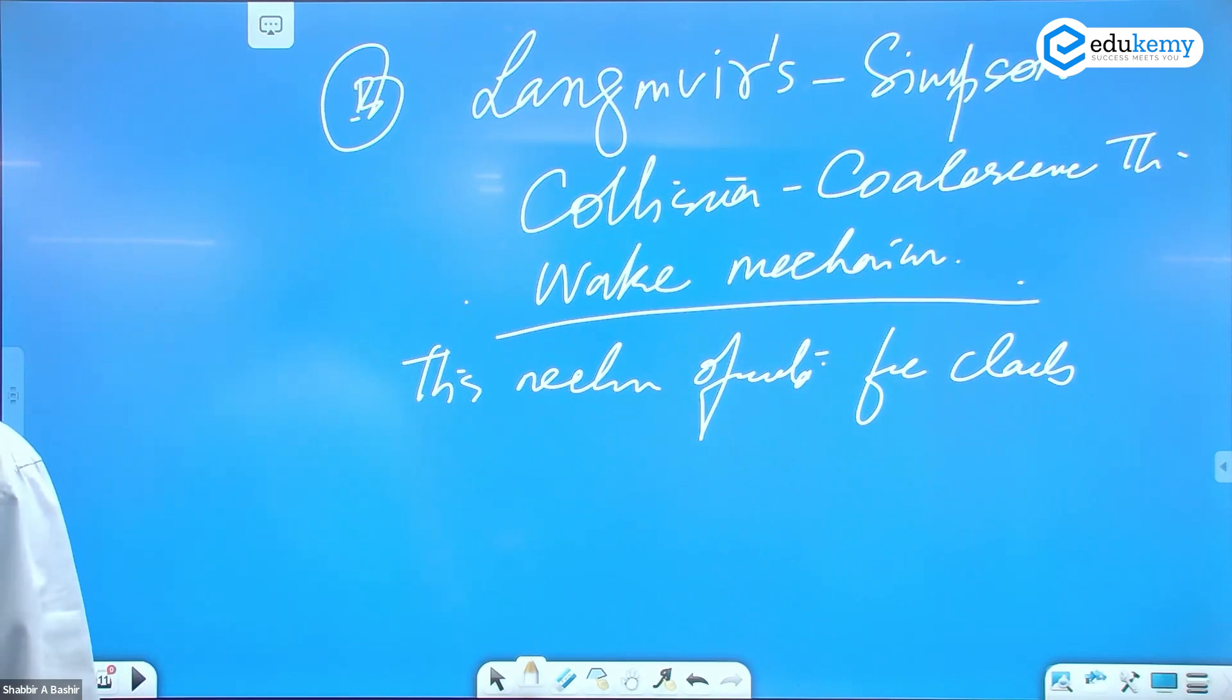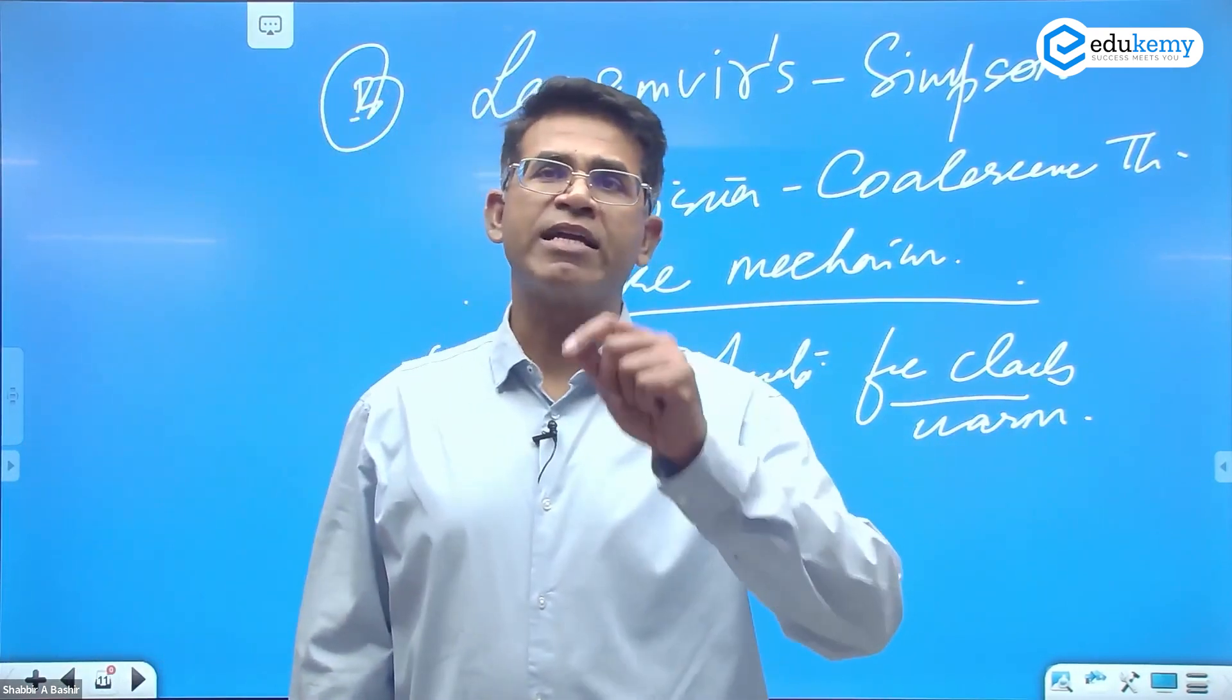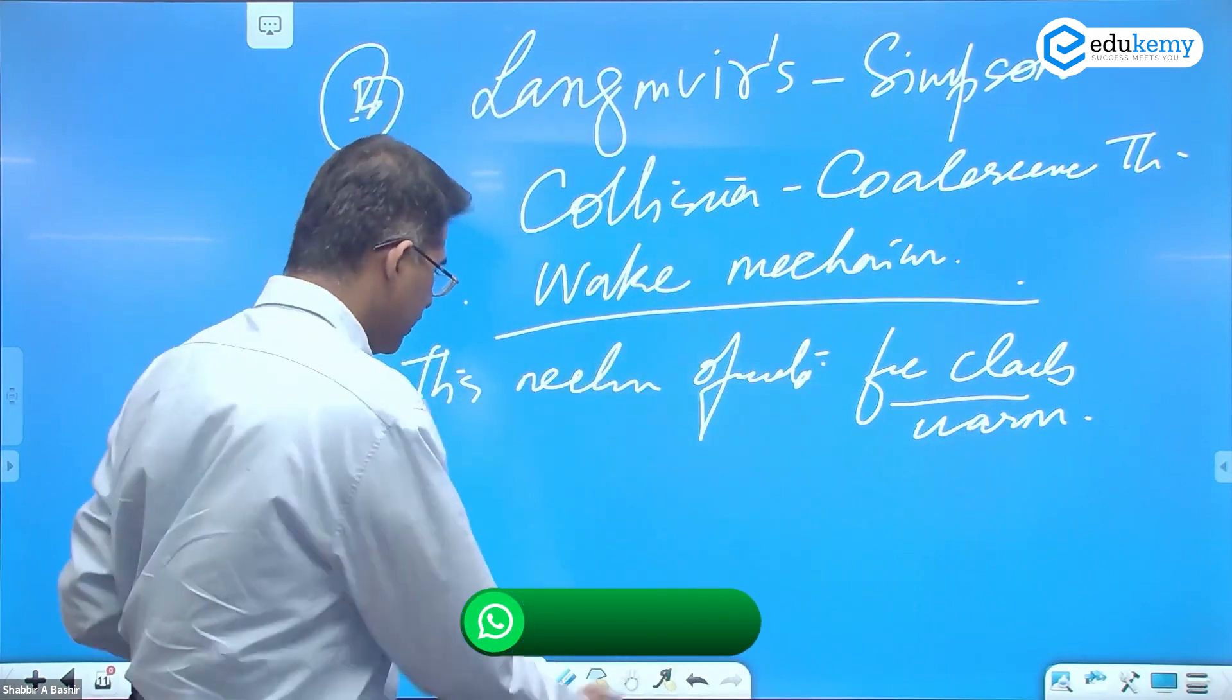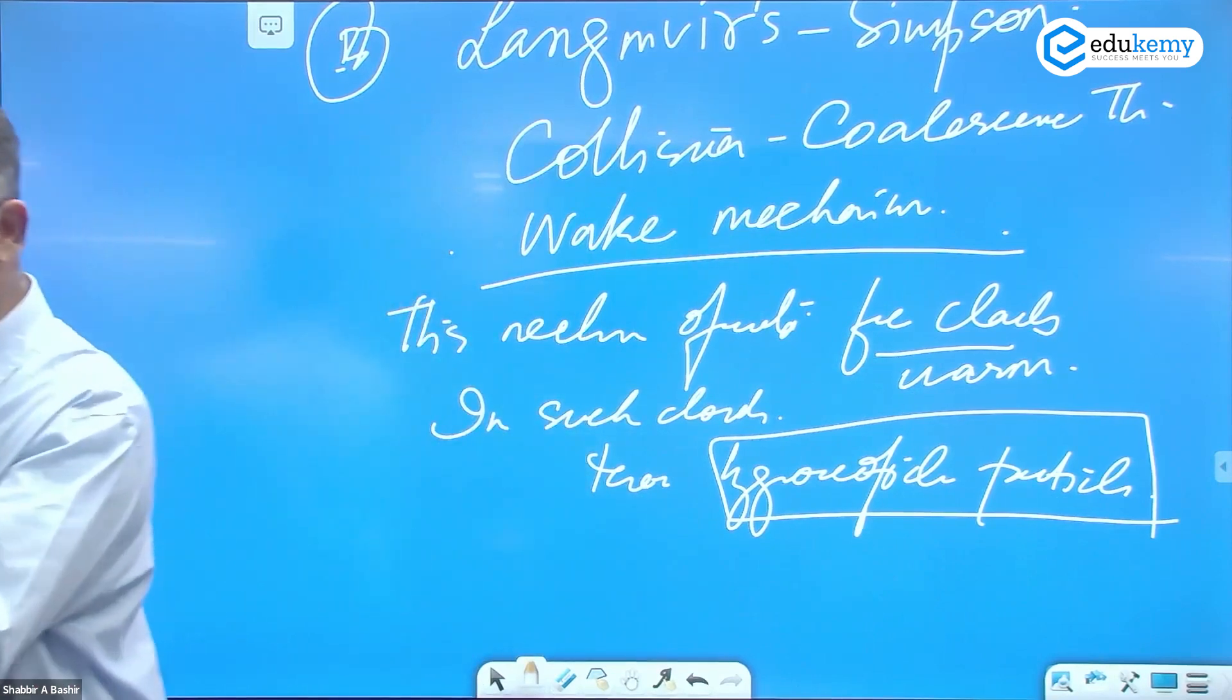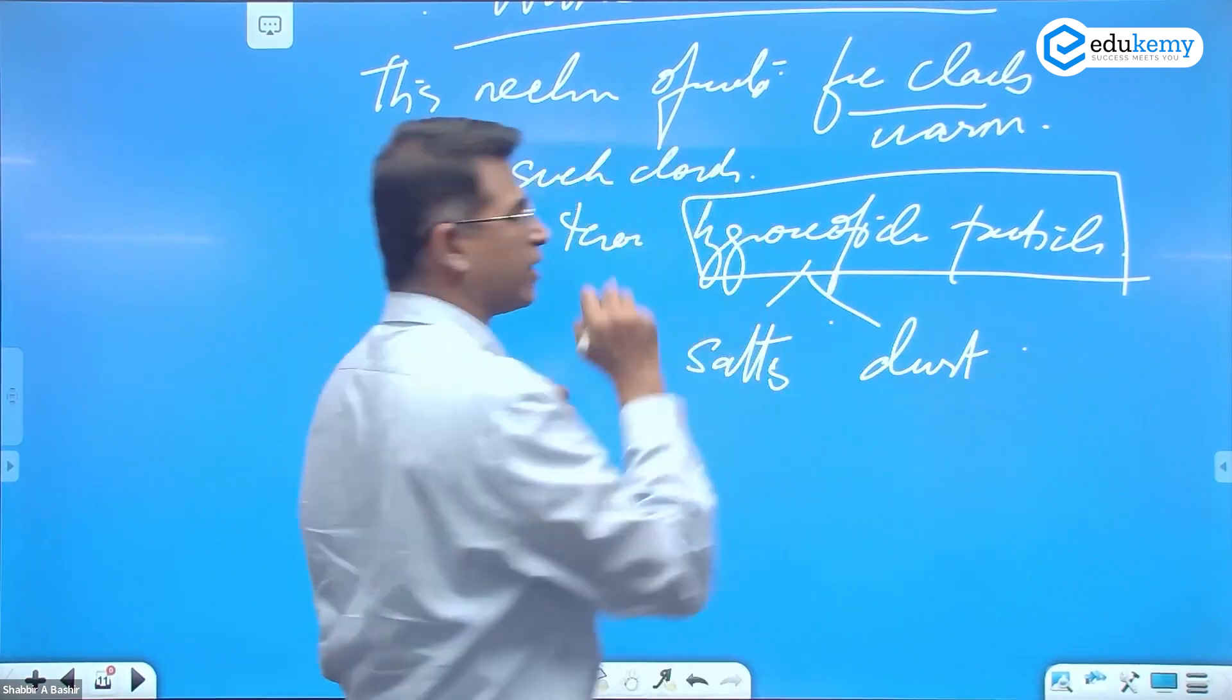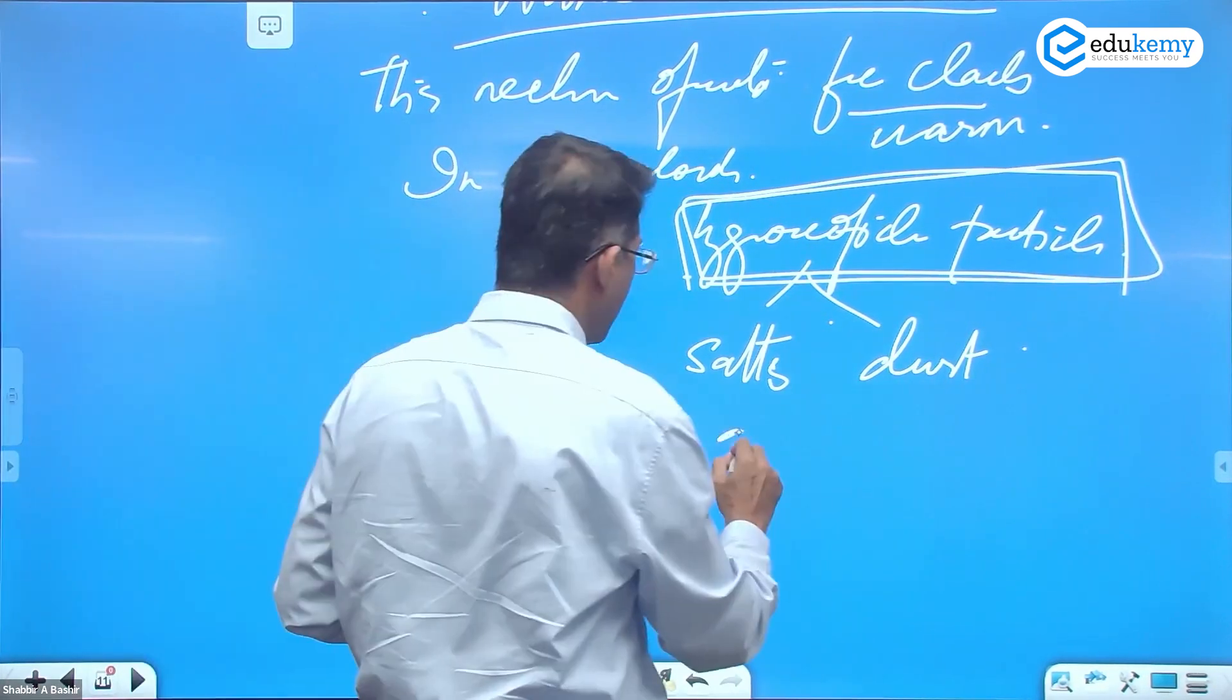It operates for warm clouds which are at temperatures above the freezing point, thus 15 degrees centigrade. In such clouds there are hygroscopic particles - particles called hygroscopic which attract moisture. Hygroscopic particles are generally salts, dust particles, and even aerosols. Such particles attract moisture and force condensation.